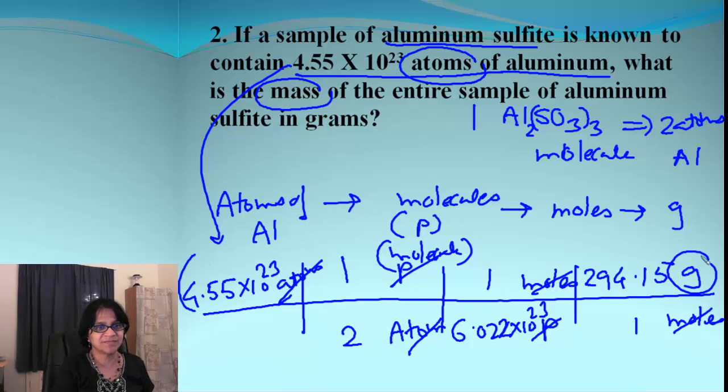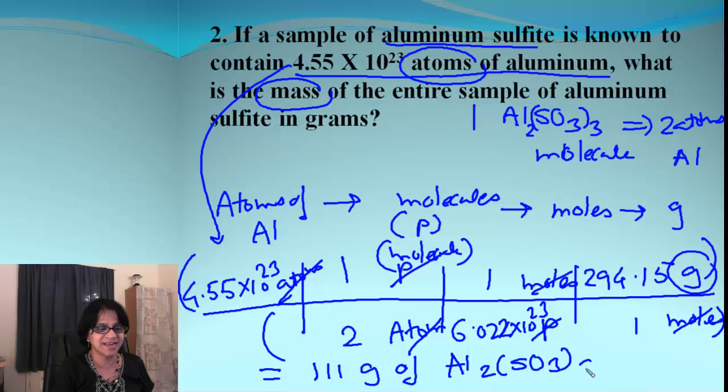So, multiply everything which we have in numerator. Divide by denominator. And the final answer, when we round up, is 111 grams of Al2SO3. And that is 3 because it's aluminum sulfite.